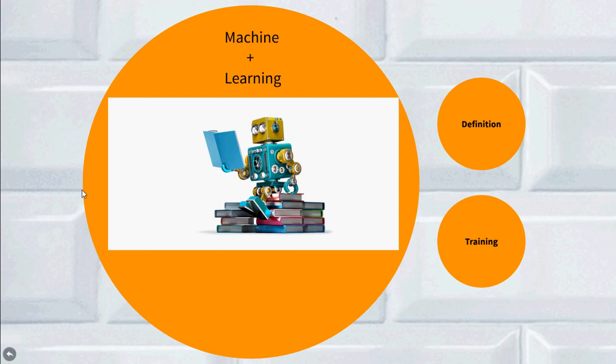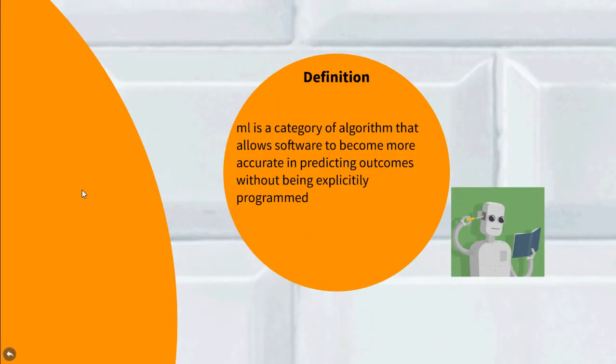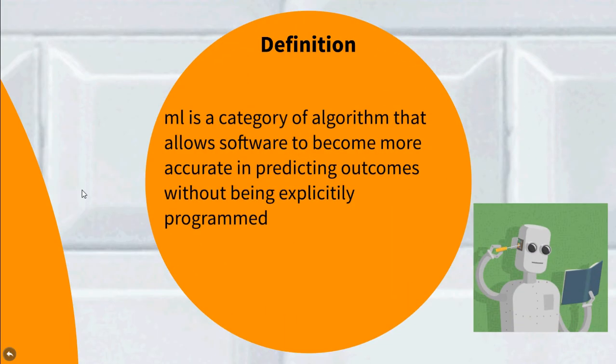Machine learning is a category of algorithm that allows software to become more accurate in predicting outcomes without being explicitly programmed.